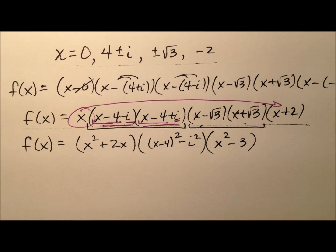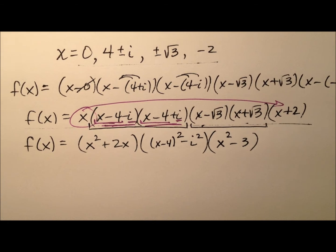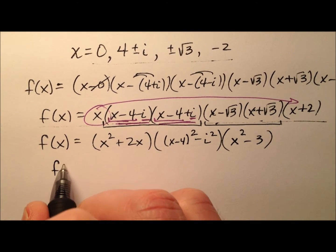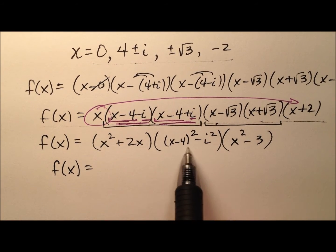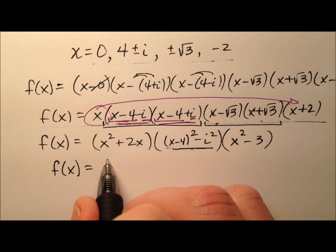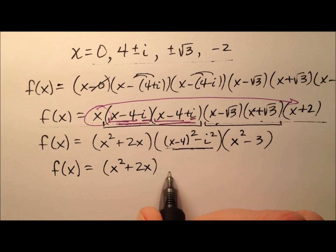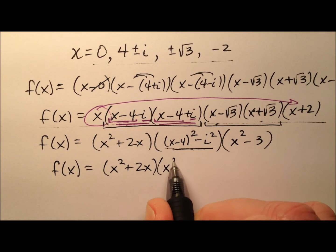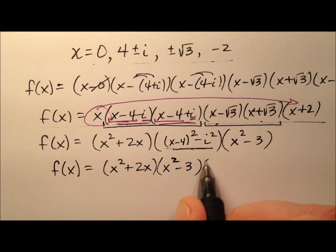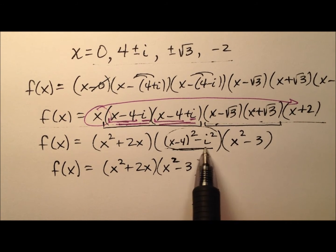Okay, so really I just need to simplify this up a little bit and multiply through. Let's look at this middle factor here. So we have our x squared plus 2x and then let's go ahead and bring this x squared minus 3 over next to him and then let's just focus on this right here.